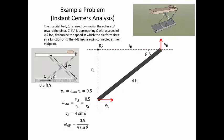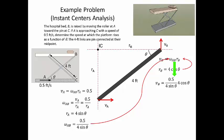For the velocity at B: V_B equals omega_AB times R_B. Using geometry, R_B equals 4 cosine theta. Substituting omega_AB and R_B, we get V_B equals (0.5 / (4 sin theta)) times (4 cos theta). The fours cancel, and cosine over sine gives the cotangent, so V_B equals 0.5 times the cotangent of theta. We've now solved this problem using all three methods: absolute motion analysis, relative motion analysis, and instant centers.